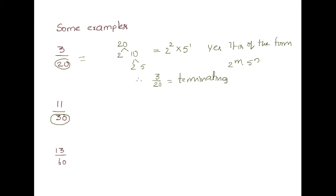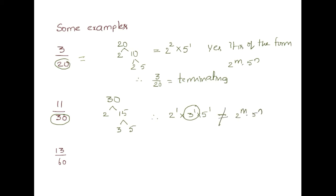Next example: 11 by 30. Prime factors of 30: 2 into 15, 3 into 5, so 2^1 into 3^1 into 5^1. Since it contains a factor of 3, it is not of the form 2^m into 5^n. Therefore it is non-terminating, or recurring/repeating.